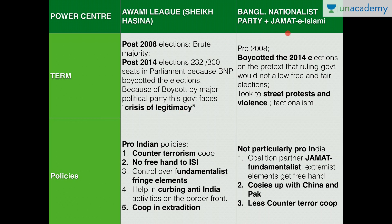The Awami League faces a legitimacy crisis because the BNP and Jamaat-e-Islami boycotted the 2014 elections, meaning voters didn't have effective choices since the principal opposition wasn't participating. Out of 300 constituencies, candidates of the Awami League were elected unopposed in 157. The BNP wanted an interim government, arguing the Awami League would hinder free and fair elections, but this was against the constitutional mandate. The situation led to street protests and violence, largely driven by Jamaat-e-Islami cadres, who are extremist and fundamentalist.